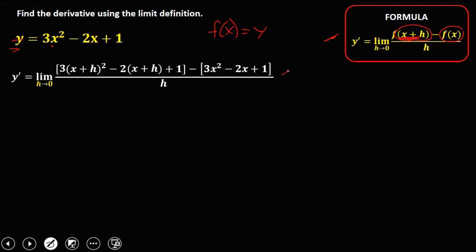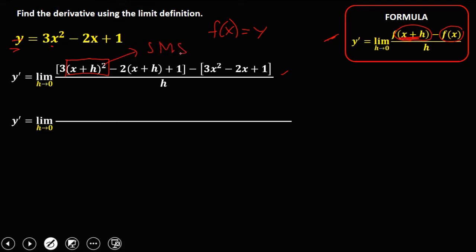From this equation, simplify. We have the limit as h approaches 0. Since we have a square of a binomial, we solve using the SMS method: S is the square of the first term — x squared; M is multiplication — 2hx; S is the square of the second term — h squared. So we get 3 times (x squared plus 2hx plus h squared), then distribute negative 2: negative 2x, negative 2h, then plus 1.